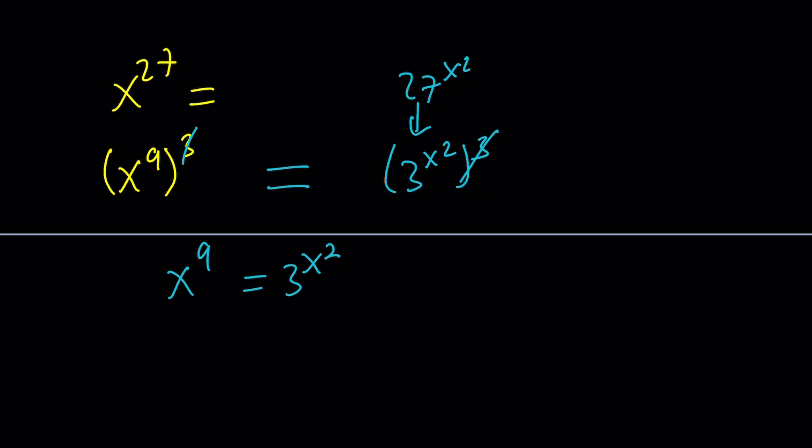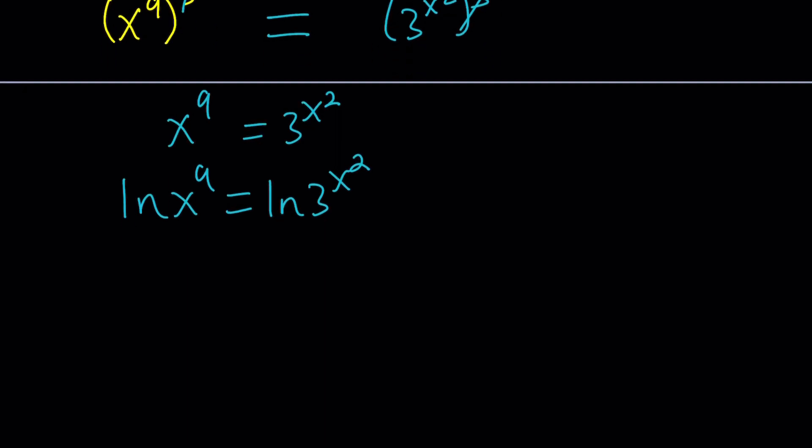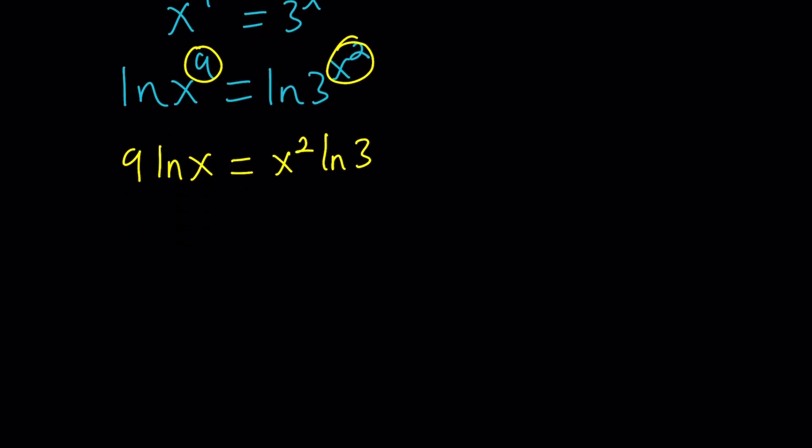One thing I can do at this point is I can log both sides. The base doesn't really matter since we have x as a variable base and 3 is a numerical base. I'm going to use the natural log. So ln x to the 9 and ln 3 to the power x squared. We can move the powers. That gives us 9 ln x equals x squared ln 3. Obviously at this point, if you haven't seen that solution before, hopefully you know the obvious solution.